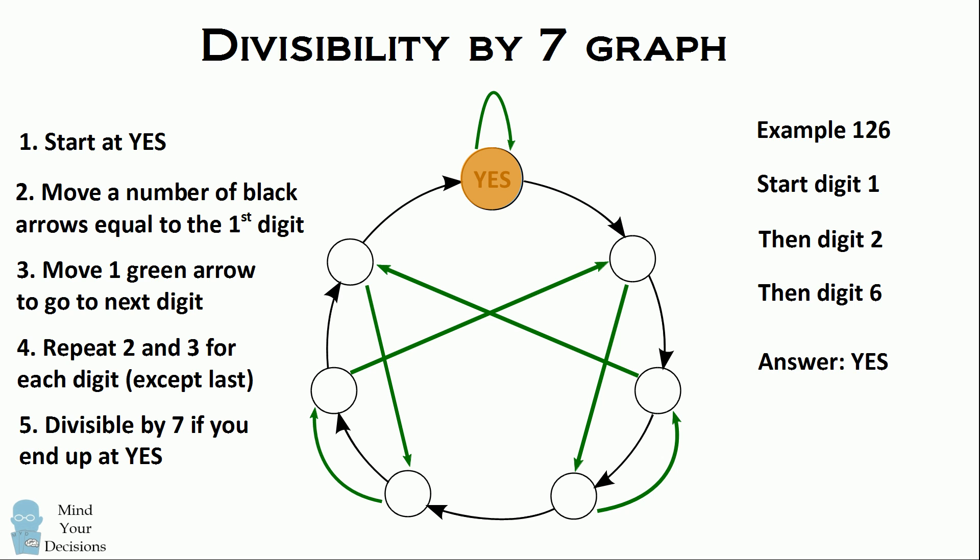Let's try another example. Let's consider the number 213. Start by placing your finger at the circle labeled YES. For the first digit two, we move two black arrows to get two circles around.